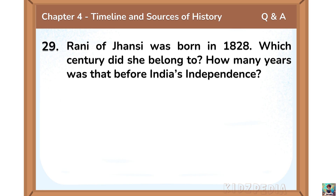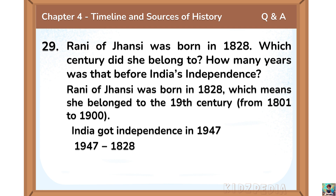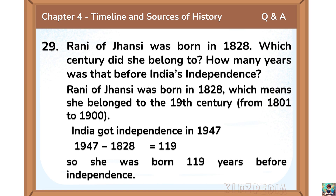Rani of Jhansi was born in 1828. Which century did she belong to? How many years was that before India's independence? Rani of Jhansi was born in 1828, which means she belonged to the 19th century. India got independence in 1947, so we subtract 1828 from 1947 to get 119. Rani of Jhansi was born 119 years before independence.